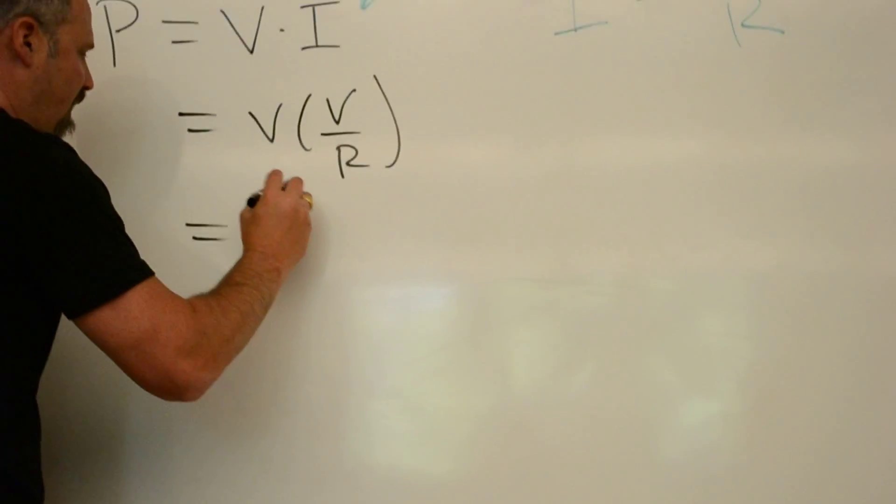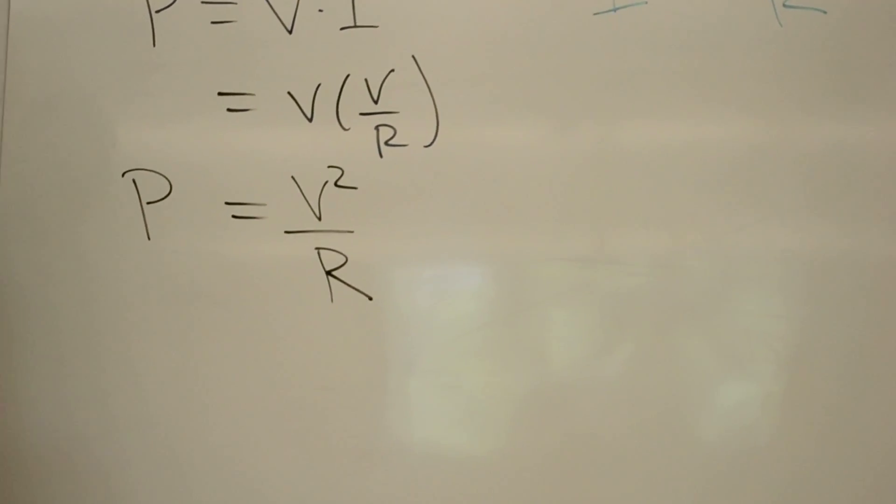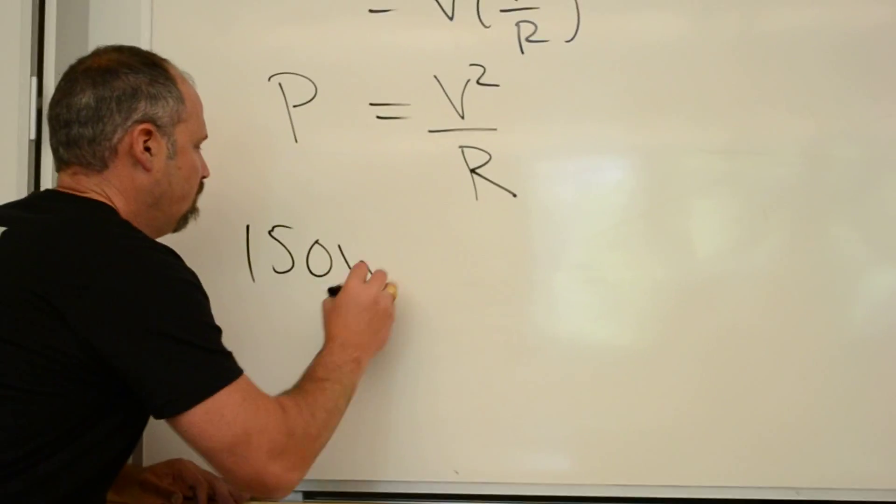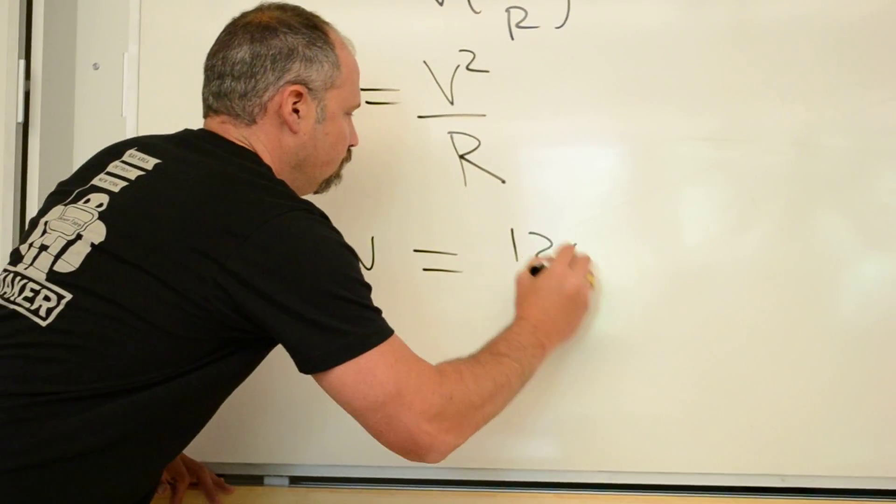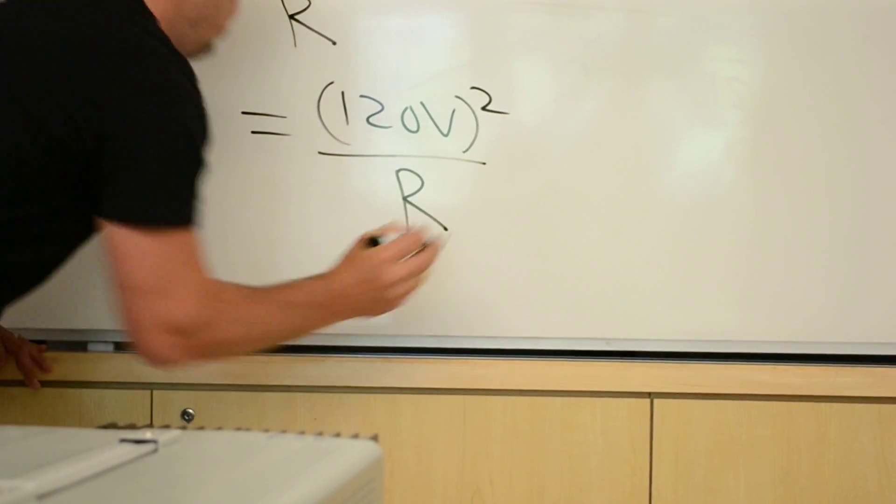In other words, the power is the voltage squared over the resistance. And now we can plug in the values that we have. We have 150 watts equals 120 volts squared all over the resistance.